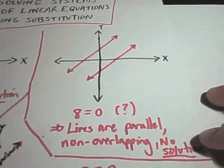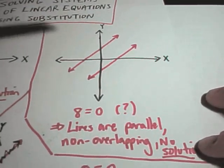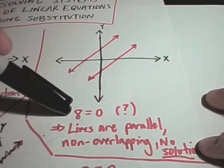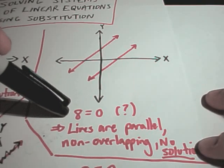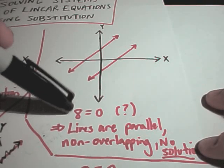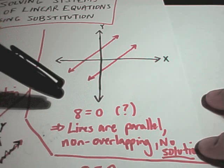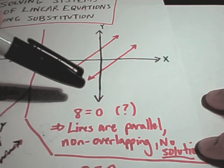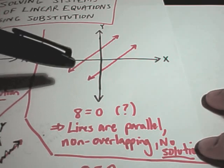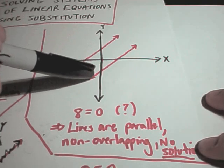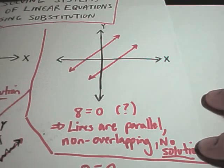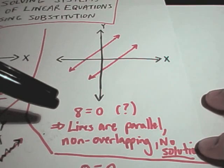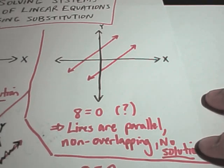Another possibility is you'll do some algebra and you'll end up getting some sort of nonsensical statement, like perhaps 8 equals 0. Well, 8 doesn't equal 0, so what that's going to imply is that your two lines are actually parallel, and in that case they never cross and there's not going to be any solution at all.